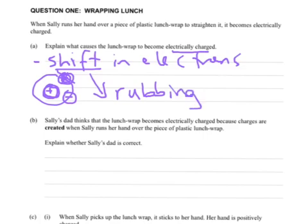Some people talk about the friction between her hand and the lunch wrap. So remember it's the hand and the lunch wrap that is being straightened by her hand. And what happens is one of those, the lunch wrap or the hand,